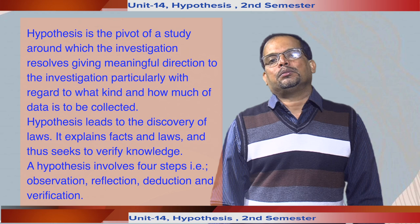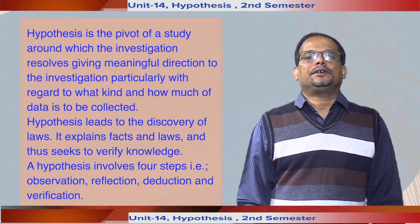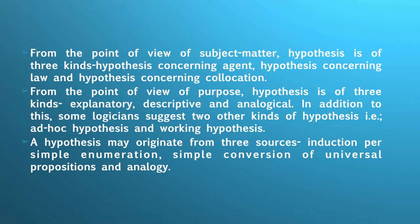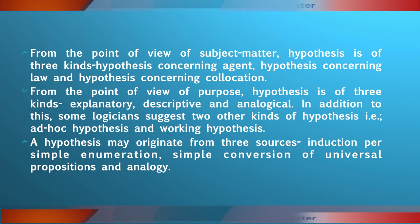From the point of view of subject matter, hypothesis is of three kinds: hypothesis concerning agent, hypothesis concerning law, and hypothesis concerning collocation. From the point of view of purpose, hypothesis is of three kinds: explanatory, descriptive, and analogical. In addition to this, some logicians suggest two other kinds of hypothesis: analog hypothesis and working hypothesis. A hypothesis may originate from three sources: induction per simple enumeration, simple conversion of universal propositions, and analogy.